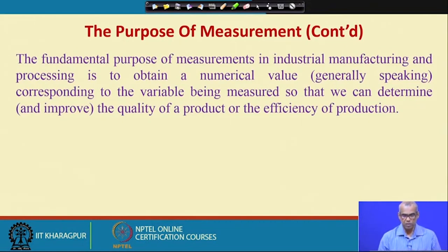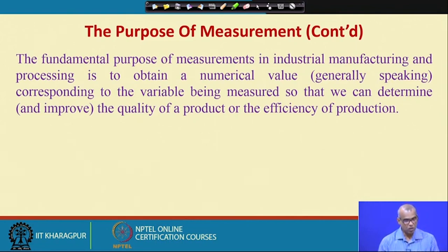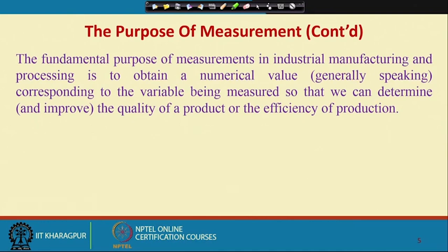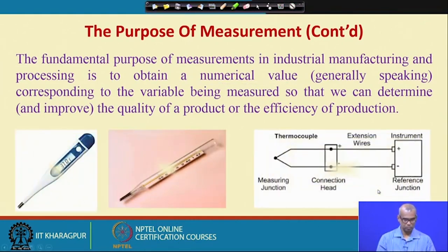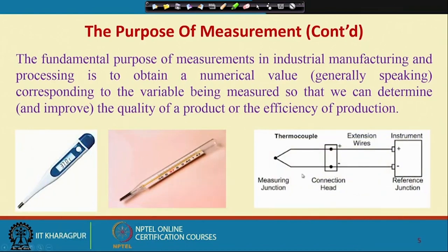The fundamental purpose of measurement in industrial manufacturing and processing is to obtain a numerical value corresponding to the variable being measured, so that we can determine and improve the quality of a product or the efficiency of production. Here we have three different temperature measuring instruments: a digital clinical thermometer, a mercury glass clinical thermometer, and a thermocouple.